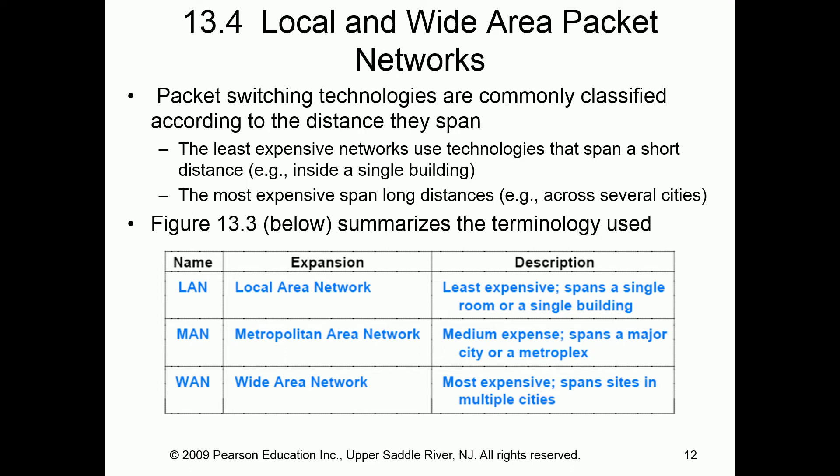We've already talked about LANs, MANs, and WANs — now let's give them better definitions. A LAN is the least expensive and spans a small area — a single room or small building. A MAN is a little more expensive and spans a larger area. A WAN is the most expensive and can span a much wider area. Basically, a WAN is a large collection of LANs and MANs put together.